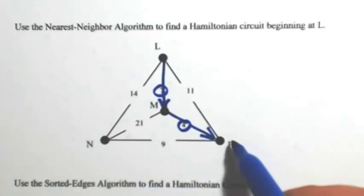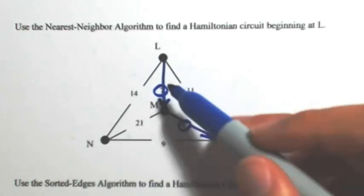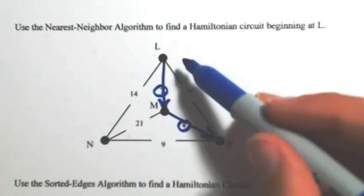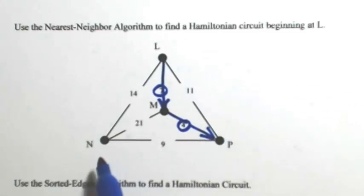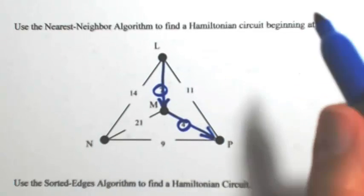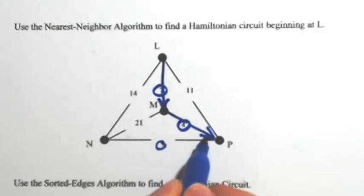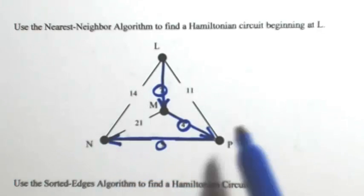From P, I can go to N or L, but I actually can't go to L because then I would complete my circuit without having hit N. So that's not Hamiltonian. So I have to go to N. So I use 9.